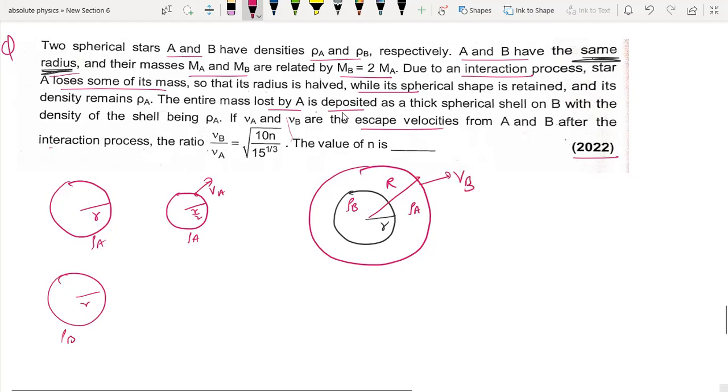First we can find the mass. Radius is r/2. Mass is density into volume, 4/3 π r³. R appears as r/2, so r³/8. So mass is m/8.